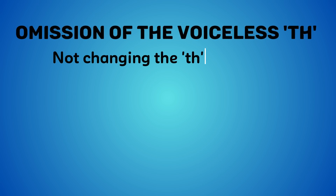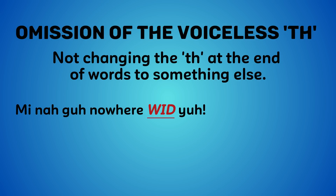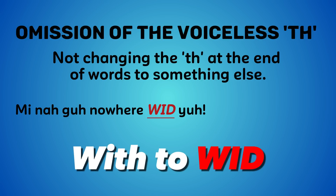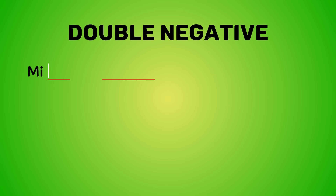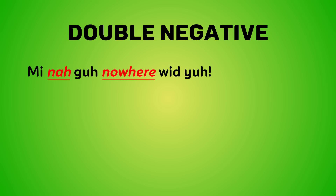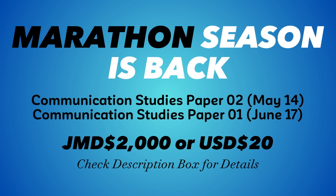We often omit the voiceless 'th' sounds from words ending in 'th.' For example, a stranger offers someone a ride, to which they reply, 'Me naw gonna go wid dis person' — saying 'wid' instead of 'with.' The same is true for words such as 'fifth,' where we often say 'fif' instead of 'fifth.' Regarding double negatives: by saying 'na' meaning 'not' and 'nowhere' instead of 'anywhere,' we add a double negative to the sentence. Another example could be 'Me naw want nothing fi drink' — 'no' and 'nothing' again place a double negative in the sentence.